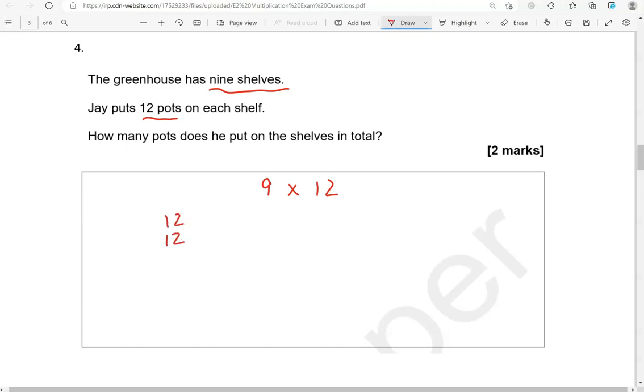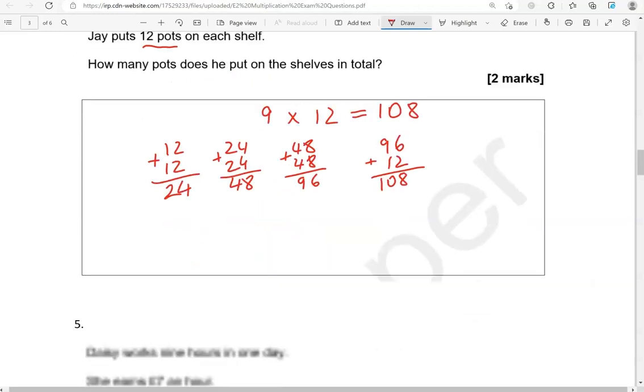So 12 and 12 is 24. That gives us 2 lots of 12. 24 and 24 is 48. So that is 4 lots of 12. 48 and 48 gives us 8 lots of 12. So that is 96. So 8 lots. Now we need just 1 more. So we're going to add 12 to this. 6 and 2, that is 8. 9 and 1, that is 10. So 108 is the answer.